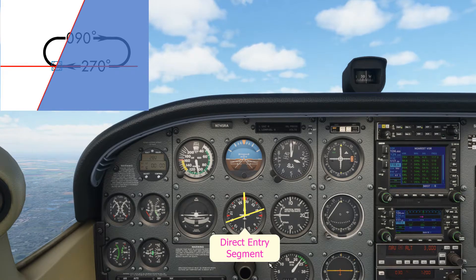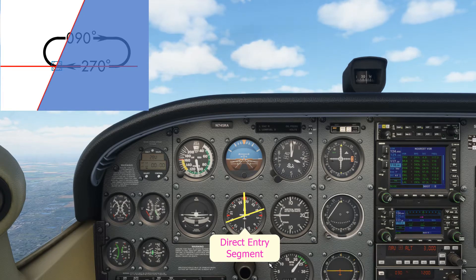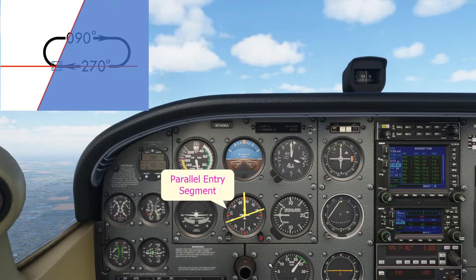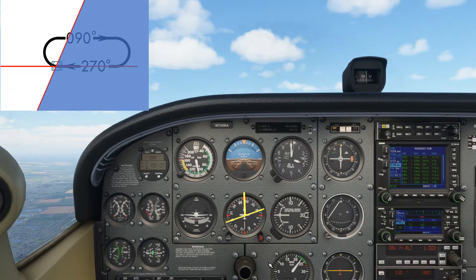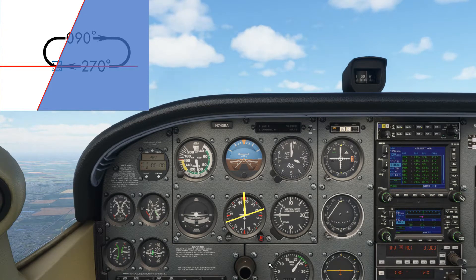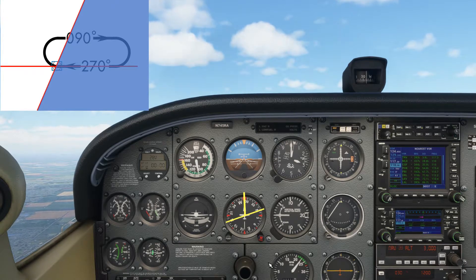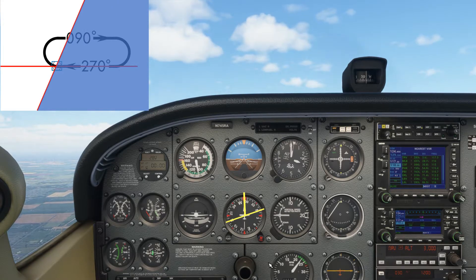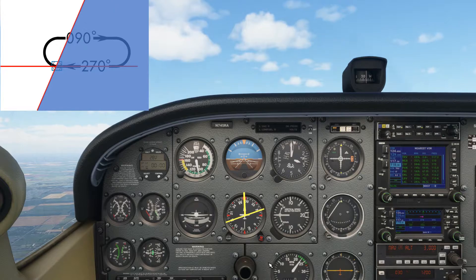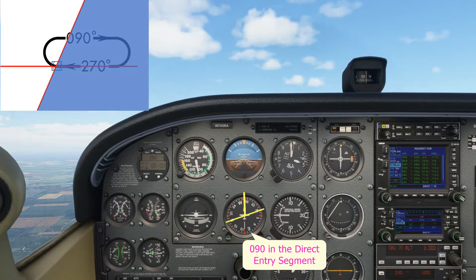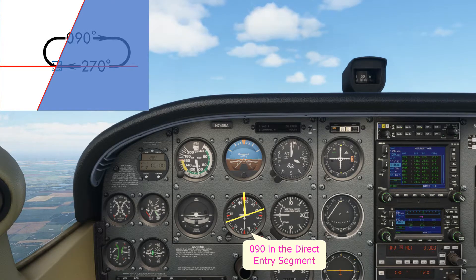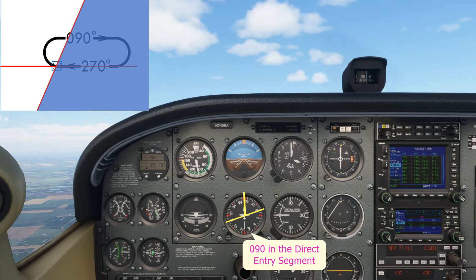The large lower segment of the semicircle represents the direct entry. The smaller portion of the upper semicircle is the teardrop entry. The larger portion of the upper semicircle is the parallel entry. All we need to do now is locate the radial of the inbound leg on the DI to see which segment it falls into. Remember that the radial is always measured from the VOR. In this case, the inbound radial is 090, and you can see that 090, or east, falls in the direct entry portion of the overlay, which means we just have to do the direct entry.